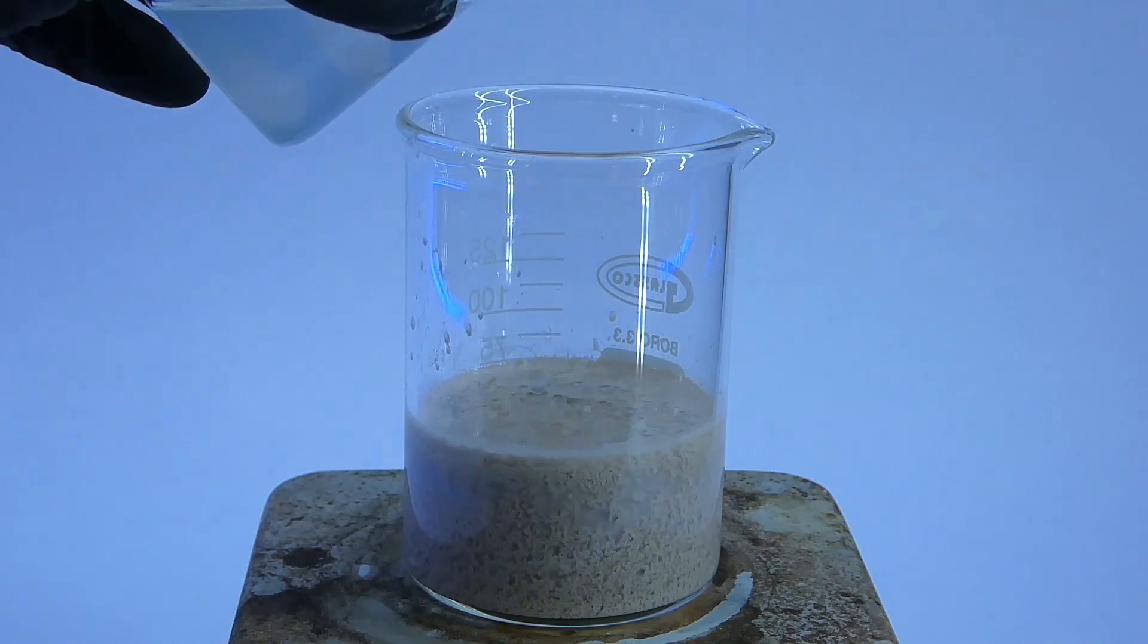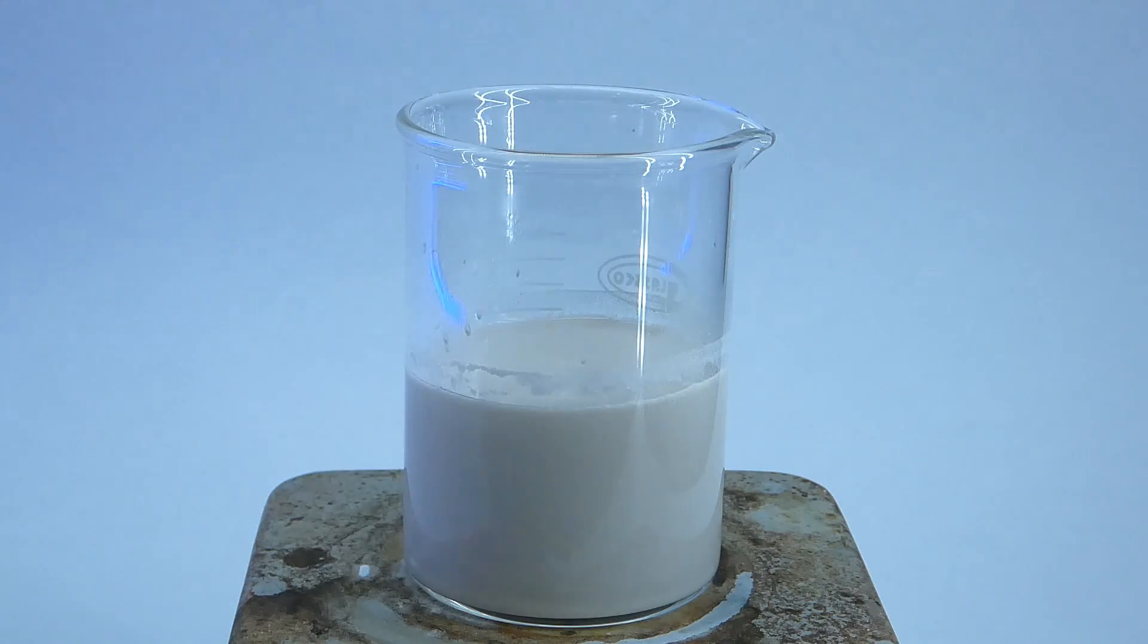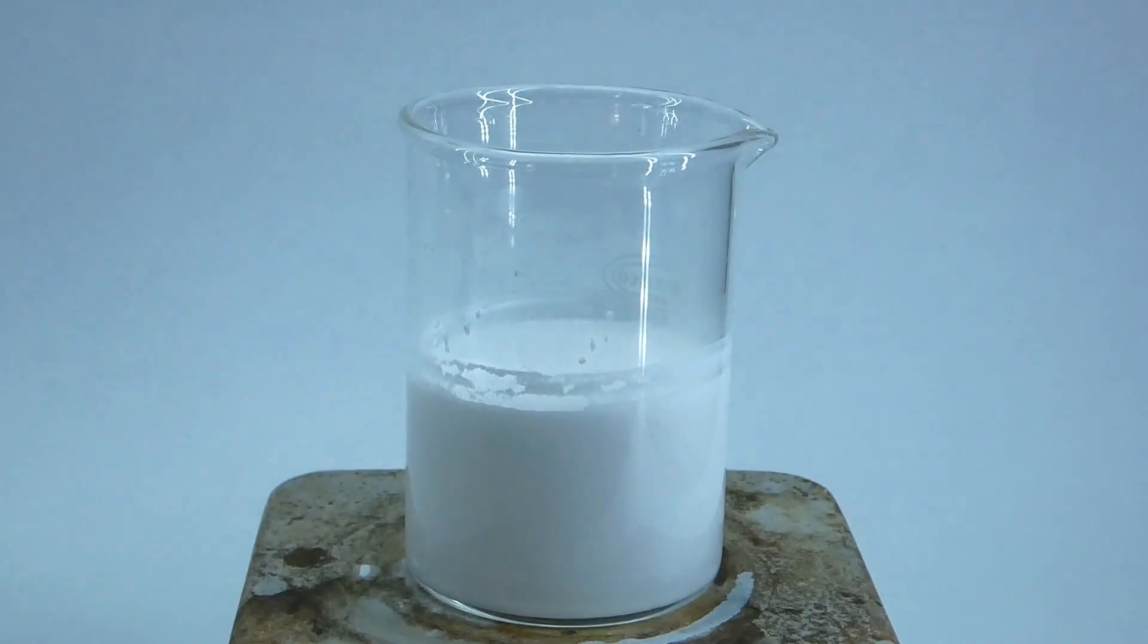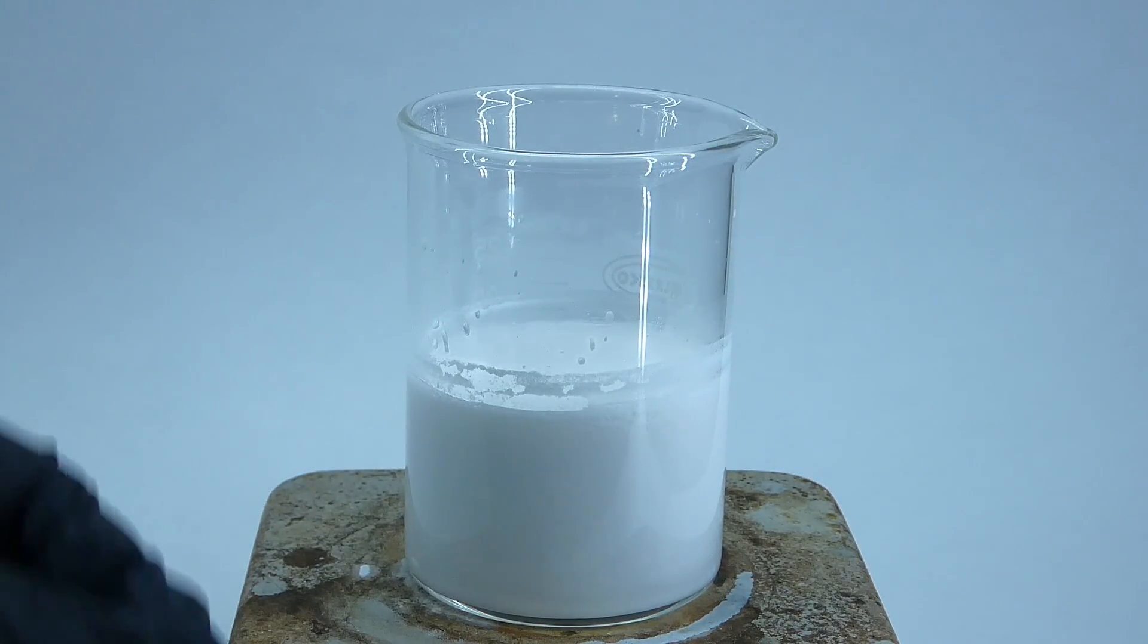At first, nothing seemed to happen, but as time went on, the mixture became whiter and whiter, transforming from chocolate milk to yogurt, because the complex was precipitating out of the solution and forming a thick slurry.